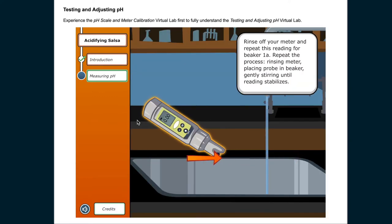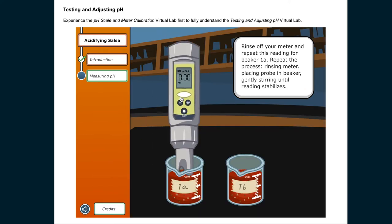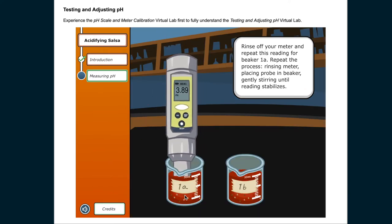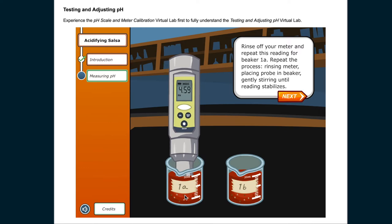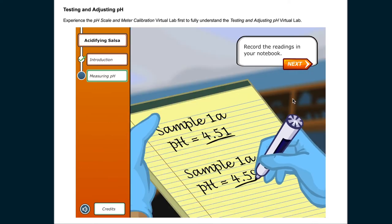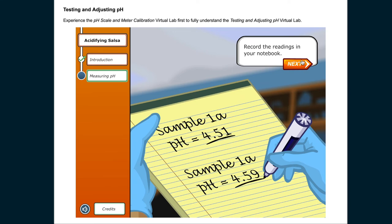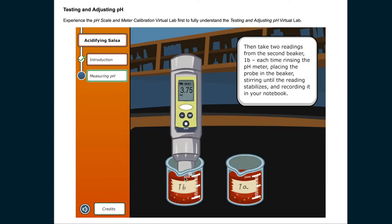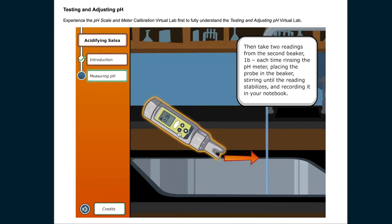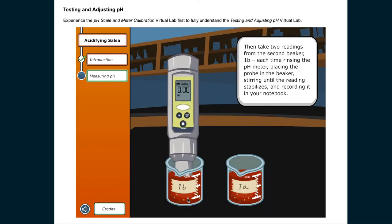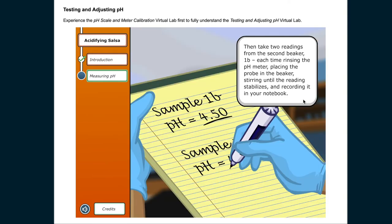Rinse off your meter and repeat this reading for beaker 1A. Repeat the process: rinsing meter, placing probe in beaker, gently stirring until reading stabilizes. Record the readings in your notebook. Then take two readings from the second beaker, 1B. Each time rinsing the pH meter, placing the probe in the beaker, stirring until the reading stabilizes, and recording it in your notebook.